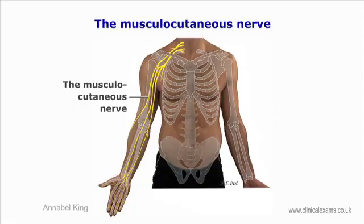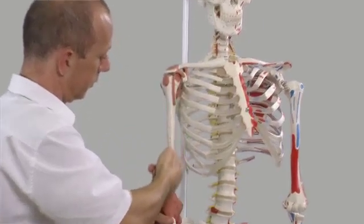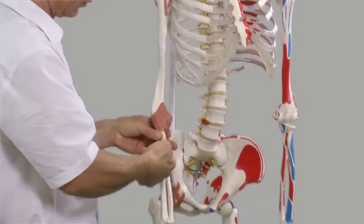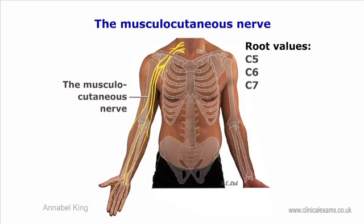The musculocutaneous nerve is not palpable, but its surface anatomy runs from the anterolateral part of the scapula just medial to the coracoid process, then the anterior borders of the axilla, and over the anteromedial part of the arm, then the lateral aspect of the forearm. It is made up of a terminal branch of the lateral cord of the brachial plexus and contains fibers from C5, C6, and C7 segments. It pierces the coracobrachialis, continuing downwards and laterally between the biceps and brachialis muscles. At the elbow it pierces the deep fascia to continue as the lateral cutaneous nerve of the forearm.